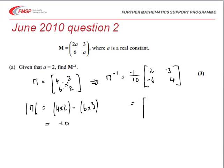Now you could leave it like that, or alternatively, you could multiply through or divide by the negative 10 to give us negative 0.2 and 0.3 on the top line, and 0.6 and negative 0.4 on the bottom line. That final step, not necessary to get your marks.